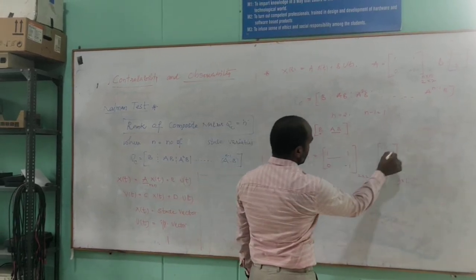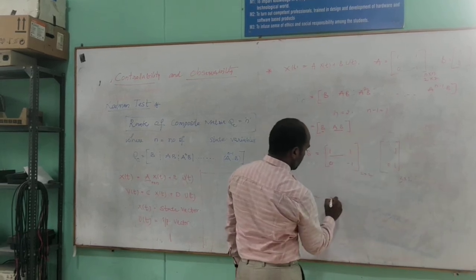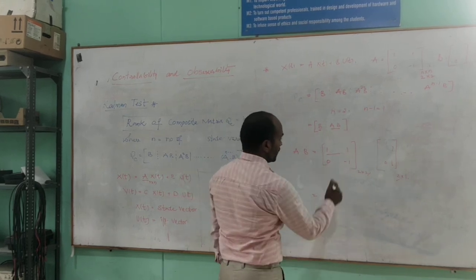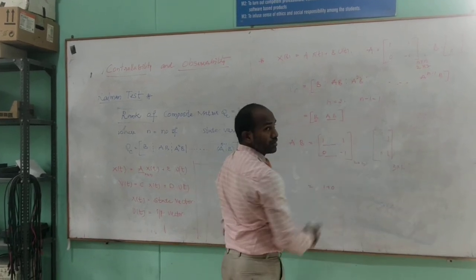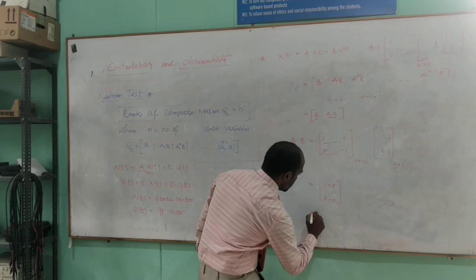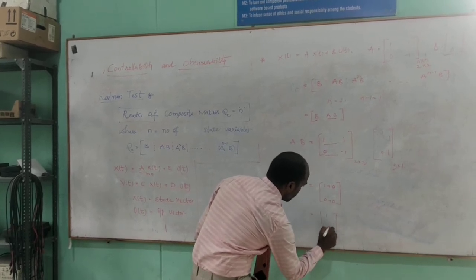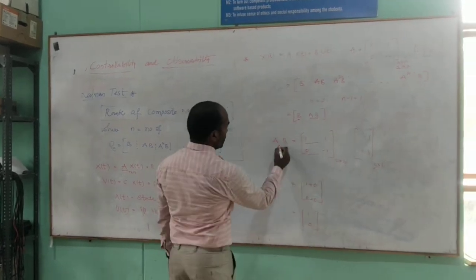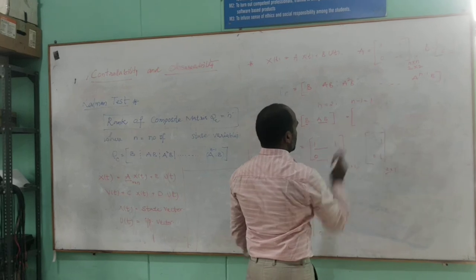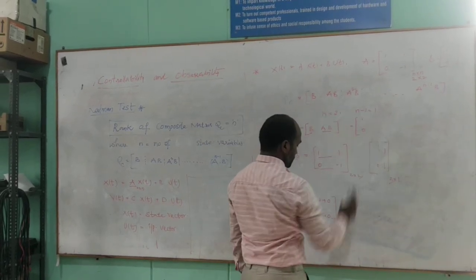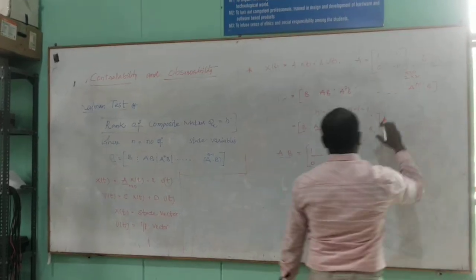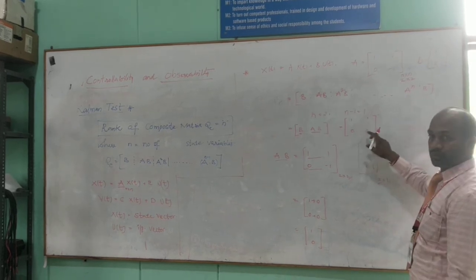Let us do the multiplication row by column. 1×1 + 1×0 = 1, and 0×1 + (-1)×0 = 0. So the product AB is [1; 0]. Now substituting these values: B is [1; 0] and AB is also [1; 0]. So the composite matrix Qc is [1, 1; 0, 0].